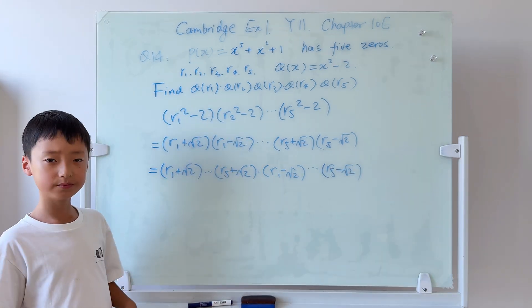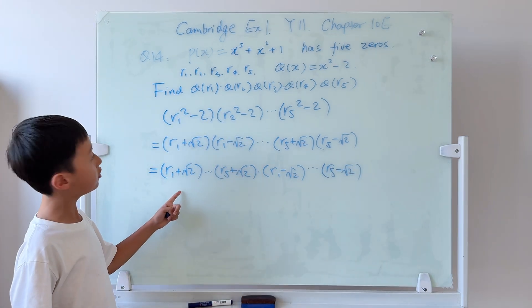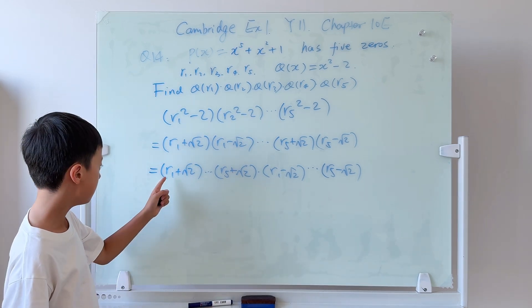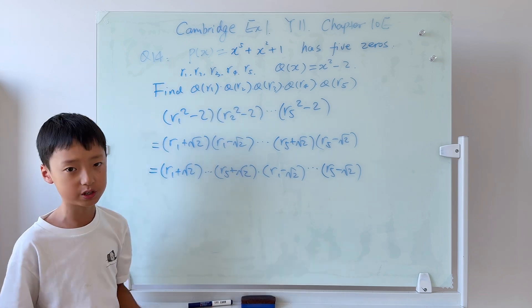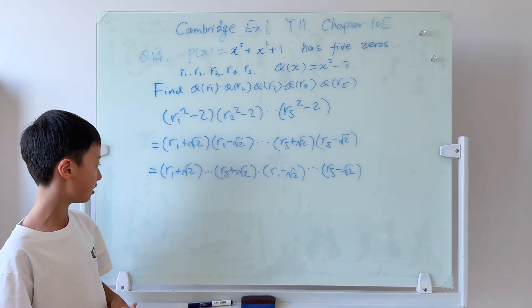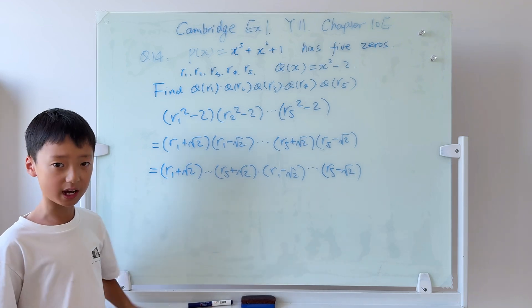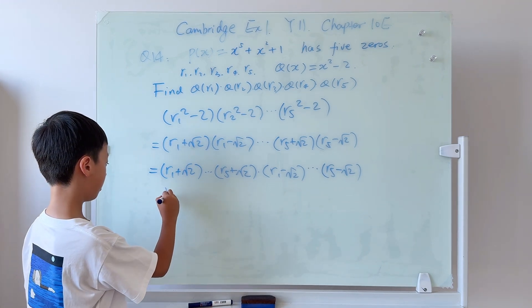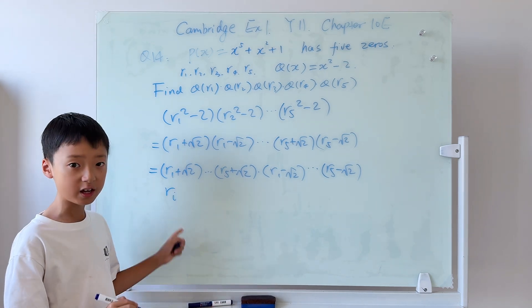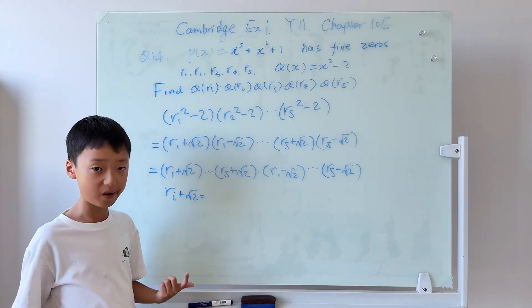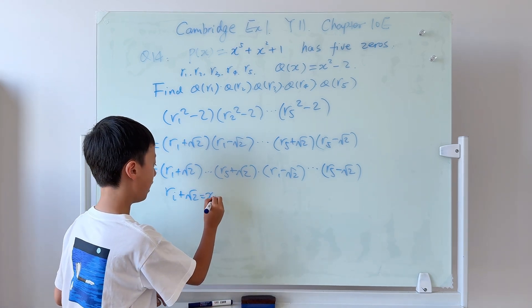How do you connect this to the polynomial? r1 to r5 are roots of that. So why don't we make a simple substitution? Let the inside equal to another variable. We can let ri plus square root of 2 equals another variable, xi, where i goes from 1 to 5.